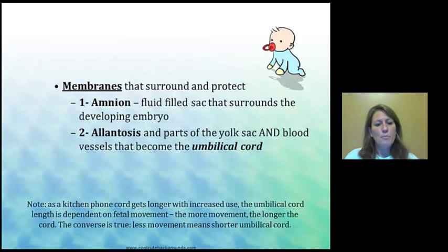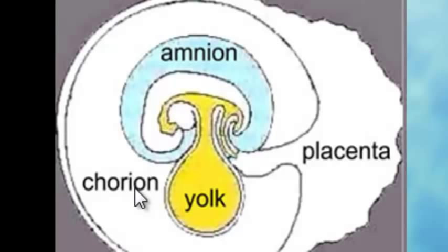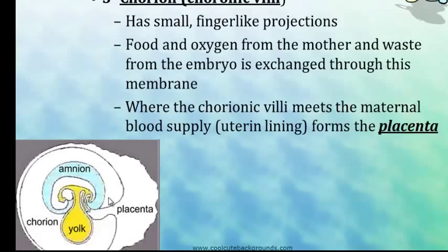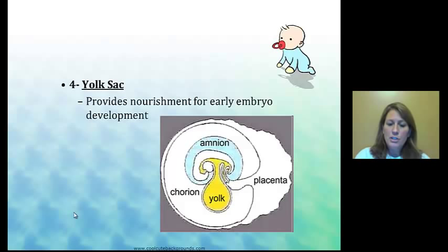Next you have the chorion, or chorionic villi, which have little projections and will eventually develop into the placenta. The placenta is going to be the lifeline — a filtering system — between the mother and the baby. The baby gets food, oxygen, and help eliminating waste through the placenta and umbilical cord. The yolk sac, in addition to the allantois, will make the umbilical cord, but before the cord is established, the yolk sac provides nourishment for the embryo.